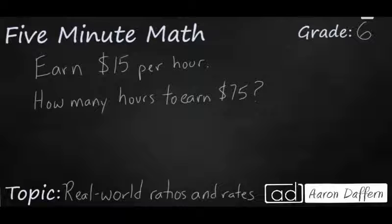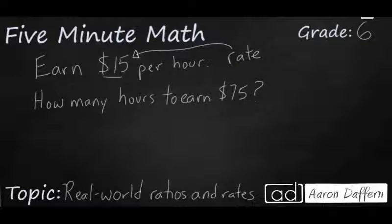In some states, the minimum wage has been raised to $15 an hour. So if that is your rate, how long would it take you to earn $75? Well, our rate is $15 per hour. You see we have two different units here. We have money and then we have hours. That's what makes it a rate.